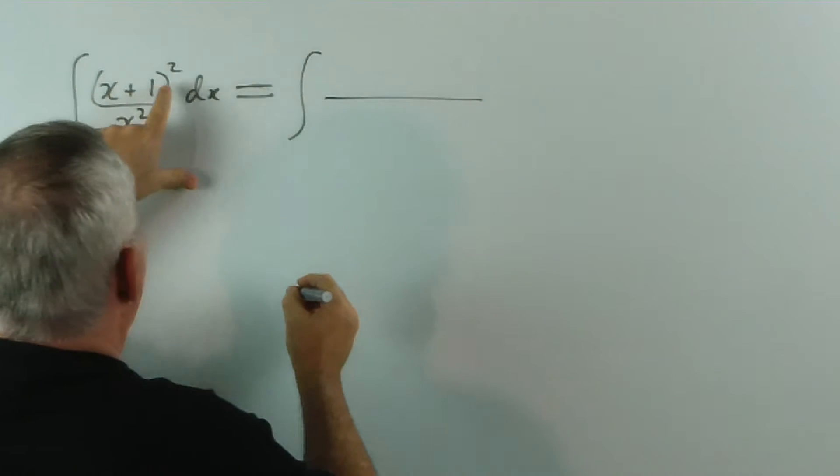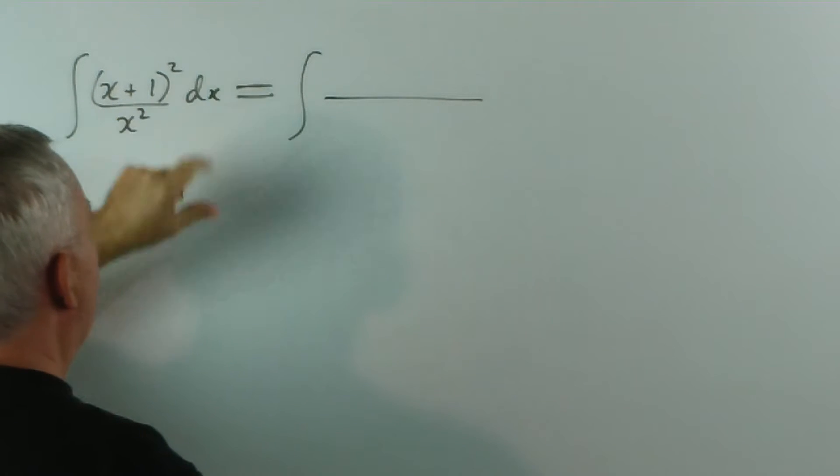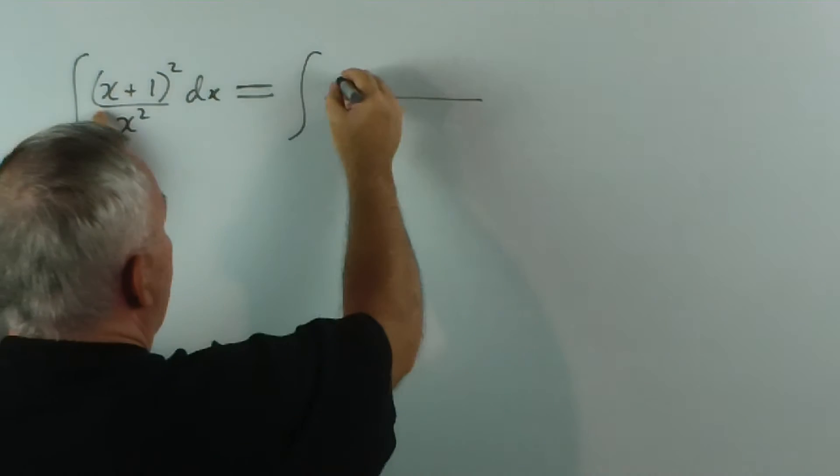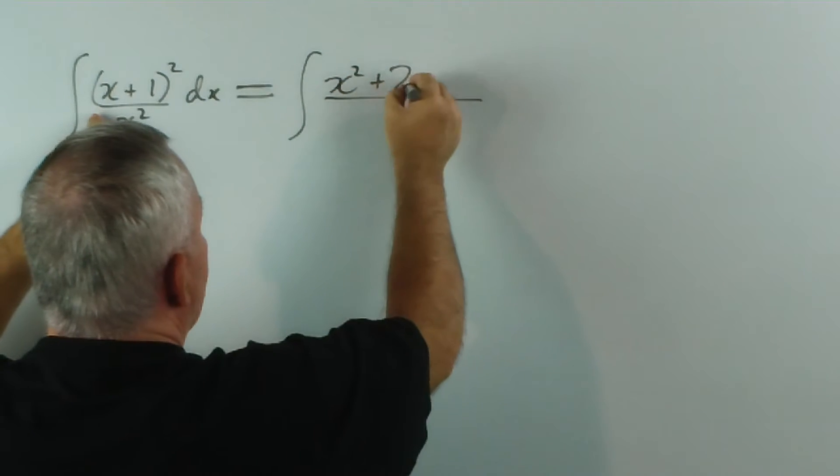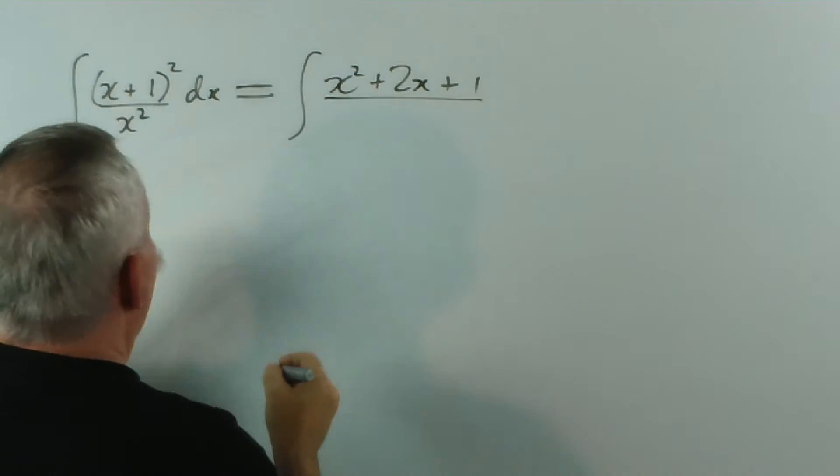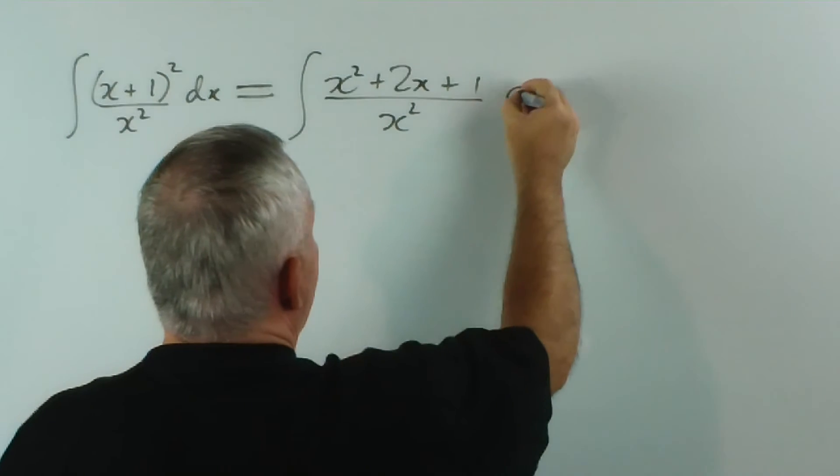If we expand the top, certainly because it's a small power, we get x squared plus 2x plus 1, because it's just a perfect square, over x squared dx.